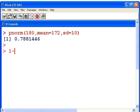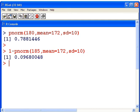The first approach we're going to take is 1 minus pnorm. 185, mean is 172, and standard deviation equals 10. So, the answer is about 9.68%.